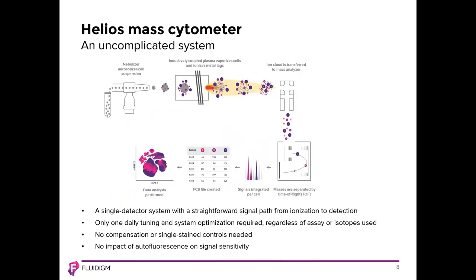The Helios mass cytometer uses the well-established technology of inductively coupled plasma spectrometry, while handling sample preparation, sample introduction, and data output in a manner similar to flow cytometry. First, the Helios is a single detector system with a direct path from cell ionization to signal detection. Only one daily QC, called tuning, is needed for system calibration and optimization. No assay or metal-specific adjustments are required, and no compensation or single stain controls are needed. Second, there is no impact of autofluorescence on signal sensitivity, since the metal isotopes used as tags do not occur naturally in biological systems. From a workflow standpoint, mass cytometry is considerably less complex than any high-parameter flow cytometric approach.